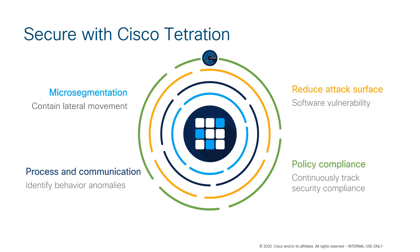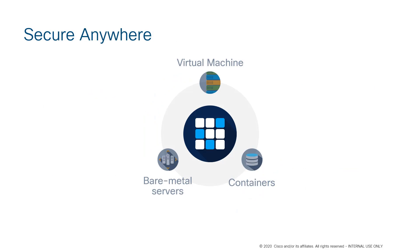The last piece is policy compliance. Tetration will proactively know when an application component deviates from the defined policy — it will block the deviation, but I also want to be alerted when it happens. I don't want to find out after the fact, when I'm trying to figure out what was compromised and what was taken.